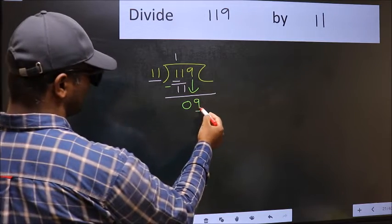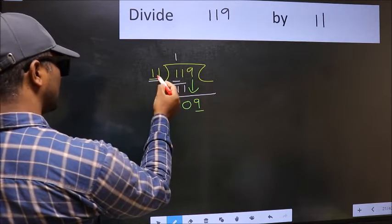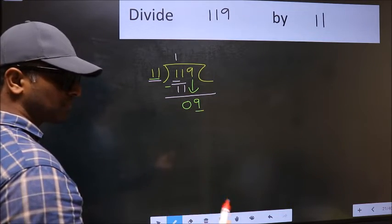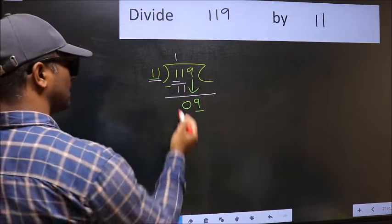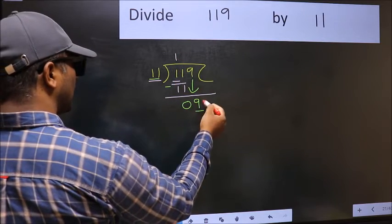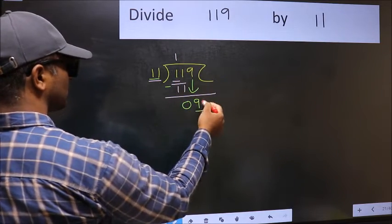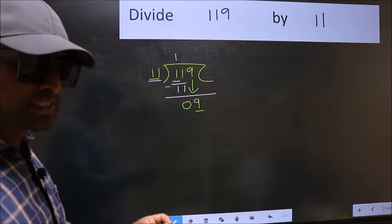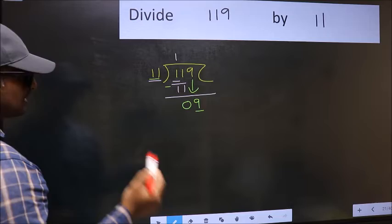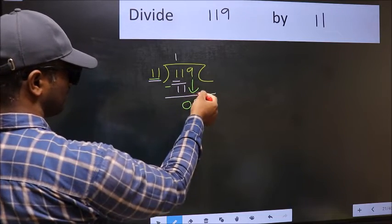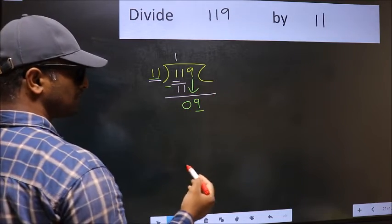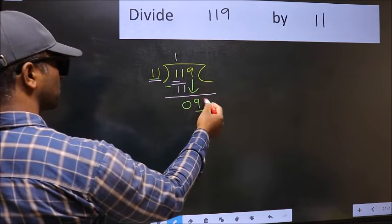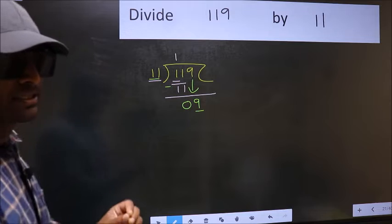Here we have 9 and here 11. 9 is smaller than 11. So what many do is they directly put dot and take 0, which is wrong. Why is it wrong? Because just now you brought this number down, and in the same step you want to put dot and take 0, which is wrong.